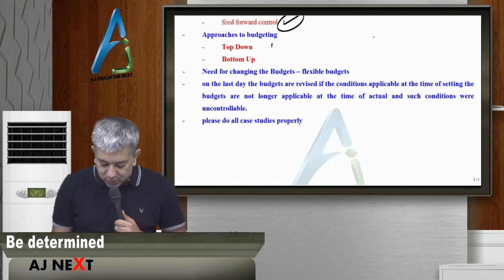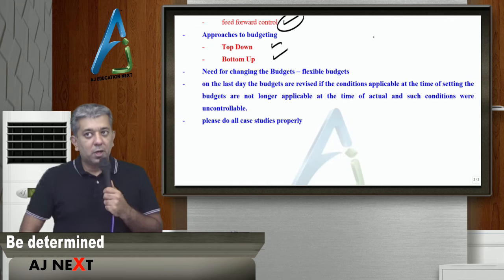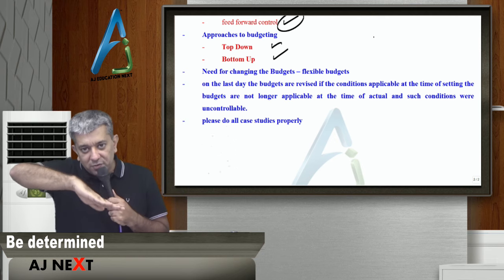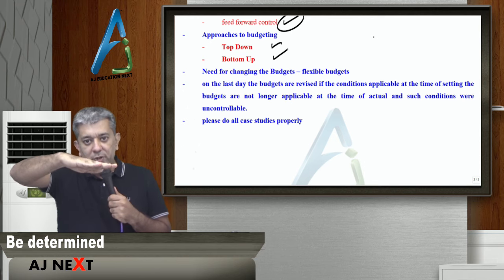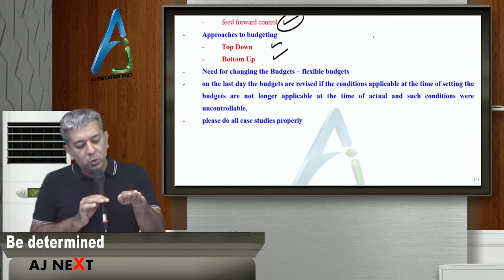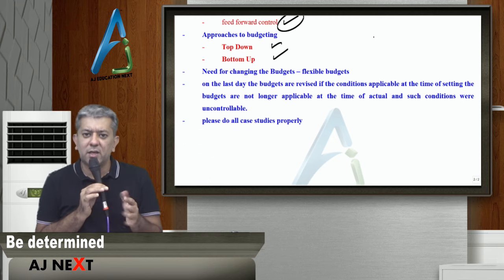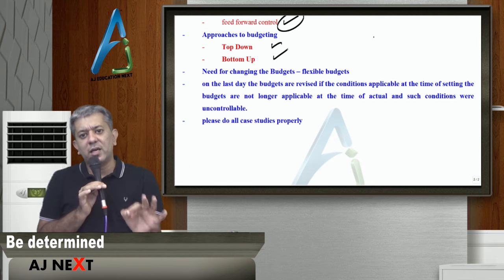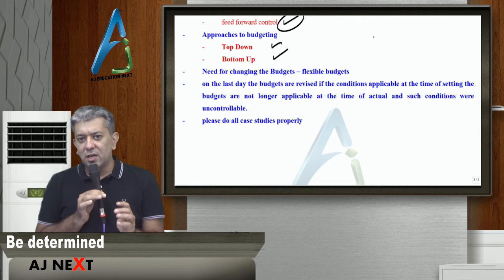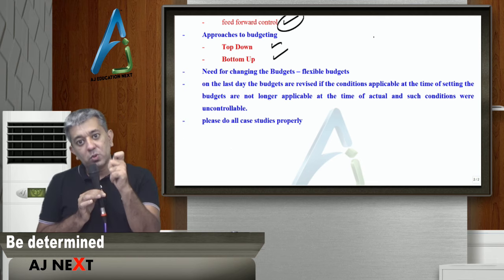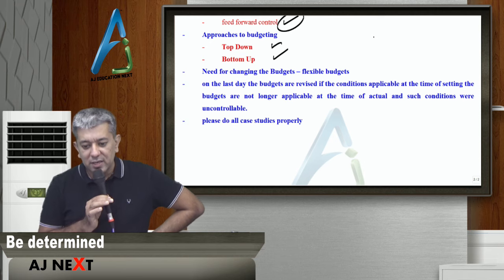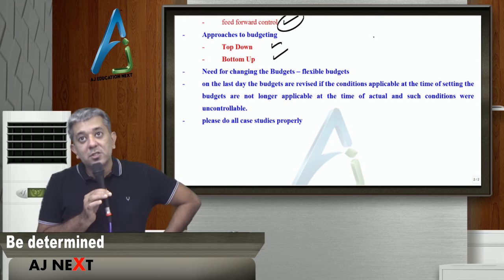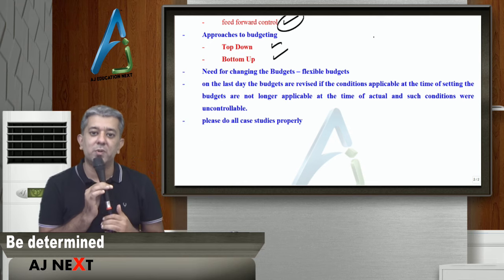Approaches to budgeting: top-down and bottom-up. In top-down, top management makes the budget and sends it down; the top budget is broken up and further broken up. Lower-level managers have no say in making the budgets — budgets are imposed on them and they are told what to do. The advantage of these budgets is that they take very little time to prepare. The disadvantage is that budgets might become unachievable, because the people making them don't know what is happening at the ground level.